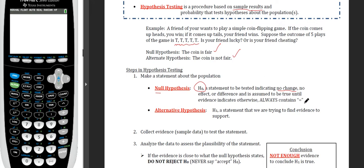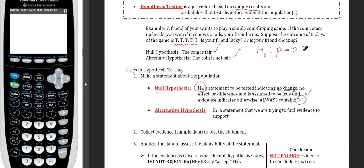We will always indicate the null hypothesis with an equal sign. In other statistics courses you might see less-than-or-equal-to or greater-than-or-equal-to signs, but here we'll keep the null hypothesis to an equal sign. For example, for the coin being fair, we'd write H₀: proportion of heads = 0.5 — an example of stating the null hypothesis as a proportion equal to some value.